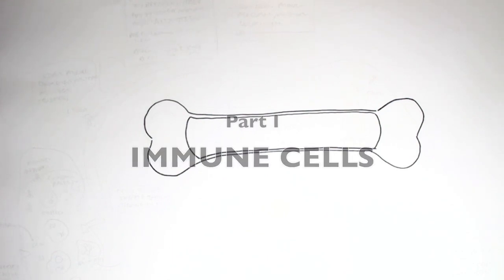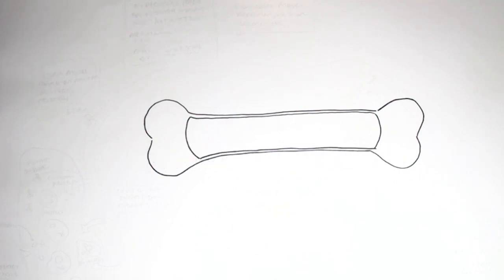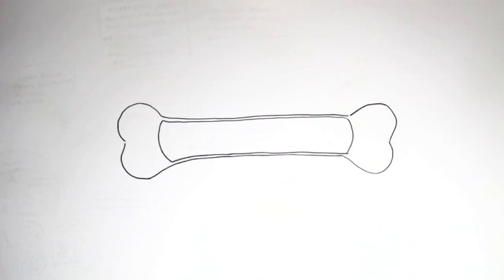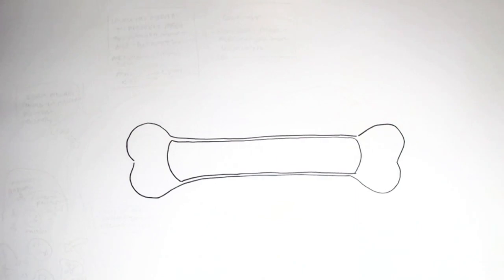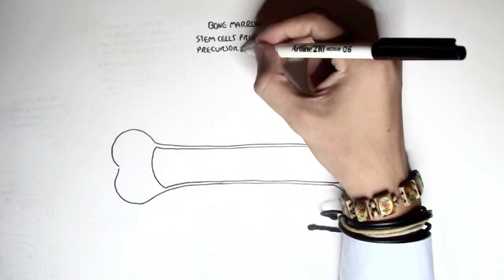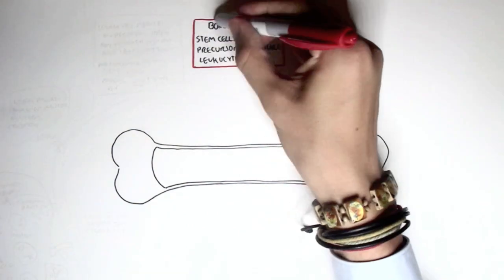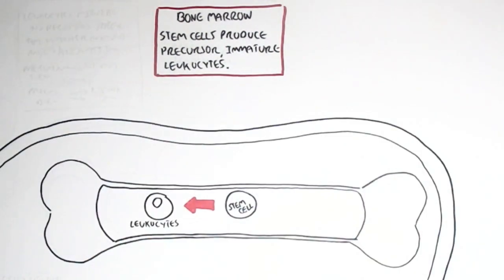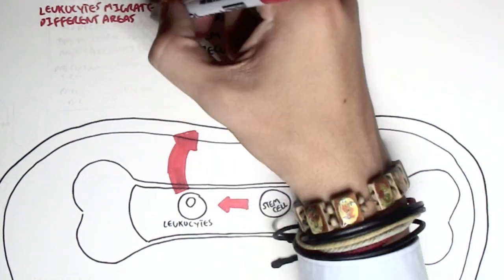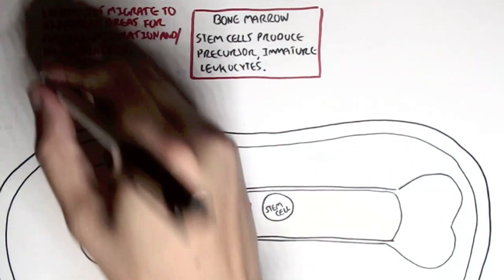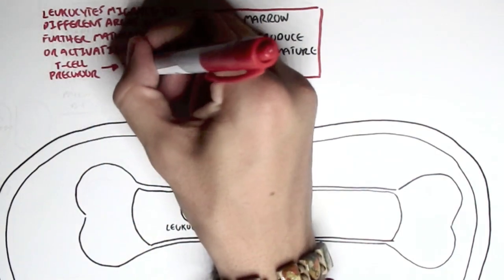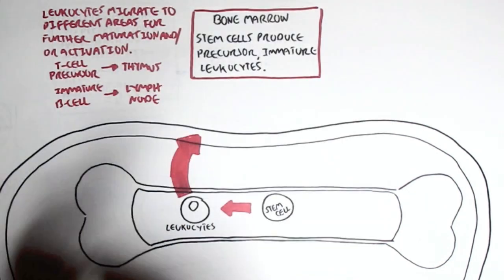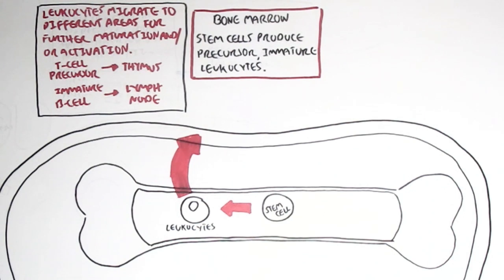In this video, we'll concentrate on the immune cells specifically. To learn about the immune cells, we have to start from where they came from, which is the bone marrow. We're going to draw a small map and look at an overview. The bone marrow contains stem cells, and these stem cells produce precursor or immature leukocytes — the white blood cells. Once these white blood cells are produced, they will leave the bone marrow into the bloodstream, and the leukocytes will migrate to different tissues for further maturation or activation. An example is the precursor T cell, which matures in the thymus, and the immature B cell, which goes to the lymph nodes to become activated.